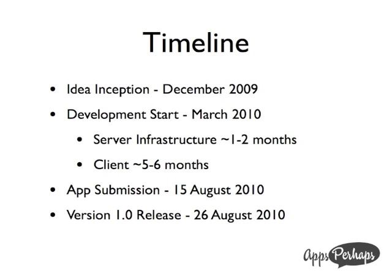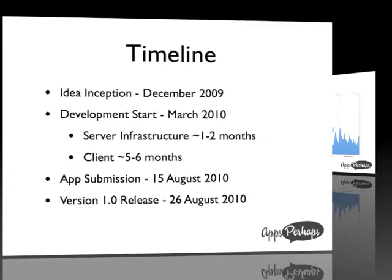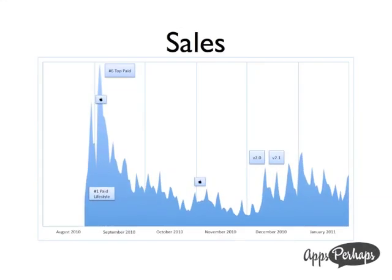We submitted the app on 15th August, which was about three weeks late because we wanted to add iPhone 4 Retina graphics — iPhone 4 had just come out so we wanted all the high-res graphics to make it look really good. The app got approved within eight days. We released it on 26th August, which is a Thursday, which we're told is a good day to release, because users start browsing the App Store a lot more leading into the weekend. This is the sales chart for OZTV from August 26th to January.